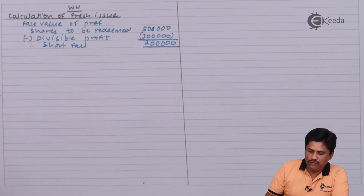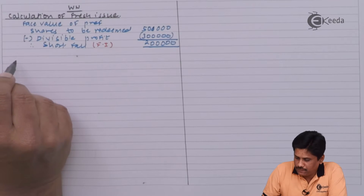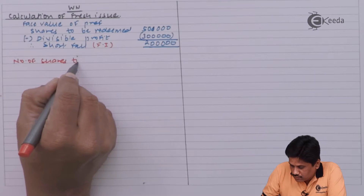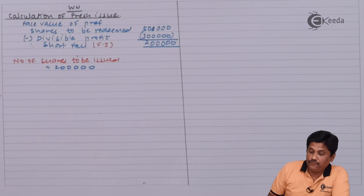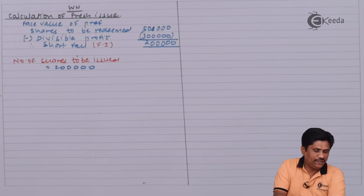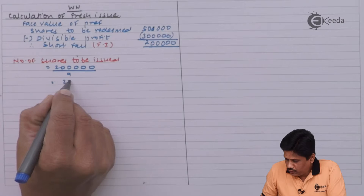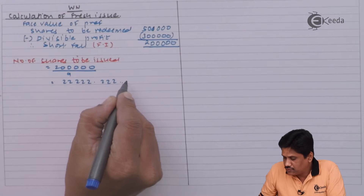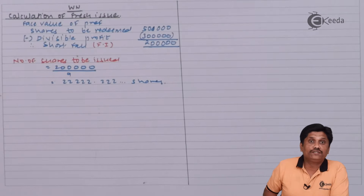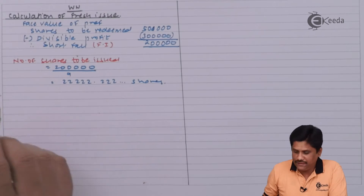To cover this shortfall, we will make a fresh issue. Number of fresh shares to be issued: we need rupees two lakhs, and the face value of the equity share is rupees nine. So two lakhs divided by nine equals 22,222.222 shares. Since we cannot issue shares in fractions, in this case we will issue 22,223 shares.